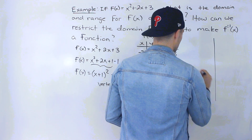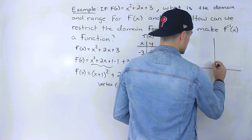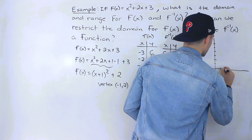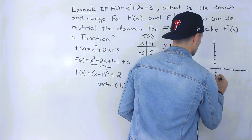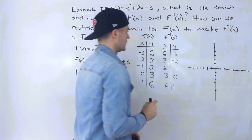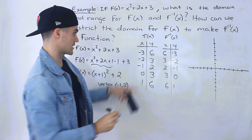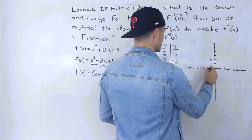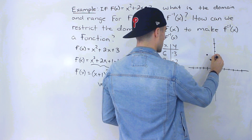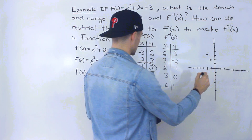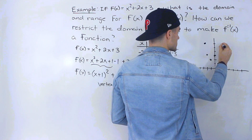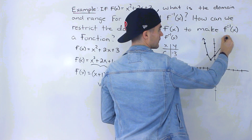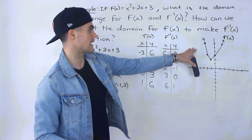Let's set up a graph with y-values and x-values going up to 6. Graphing the function first: the vertex is at (−1, 2), then (−2, 3), (0, 3), (1, 6), and (−3, 6). Connecting those points gives us the parabola — maybe not perfectly to scale, but that is the parabola.